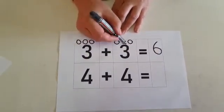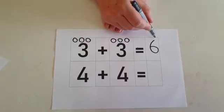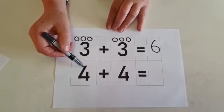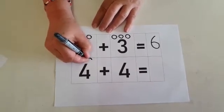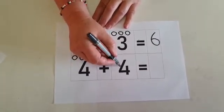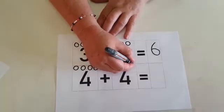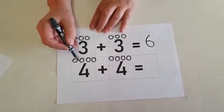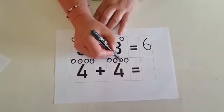Next one. What is this number? Number 4. 1, 2, 3, 4. Plus how many? 4. How many circles will we make here? 4. 1, 2, 3, 4. Now let's add it up. Let's see. 4 plus 4 equals... 1, 2, 3, 4, 5, 6, 7, 8.